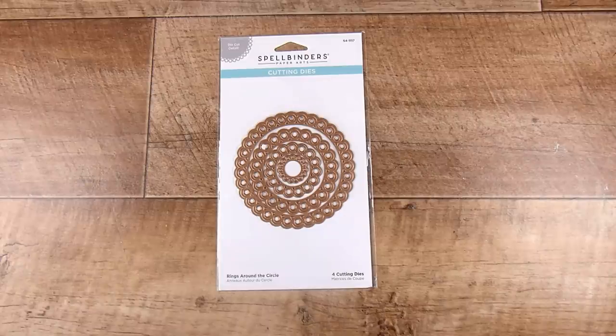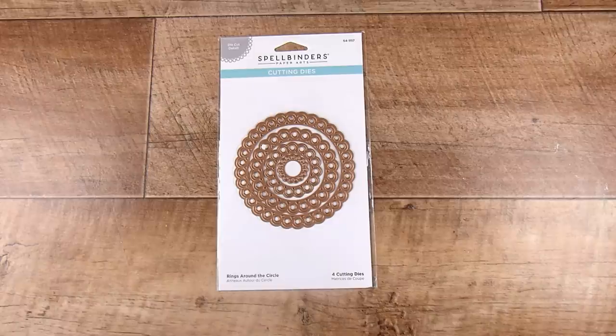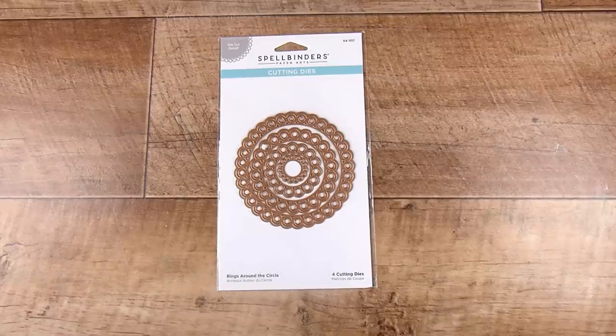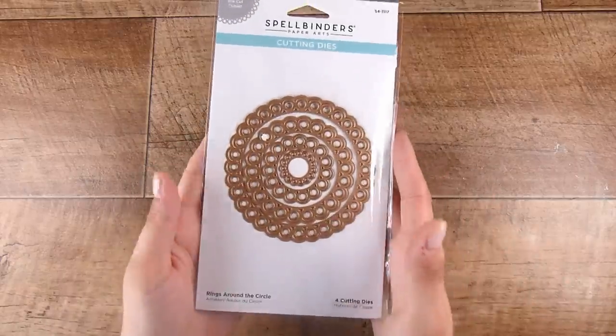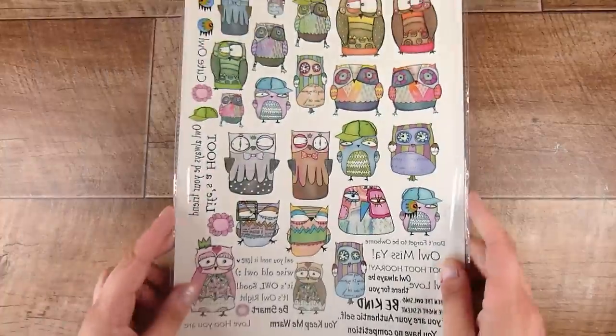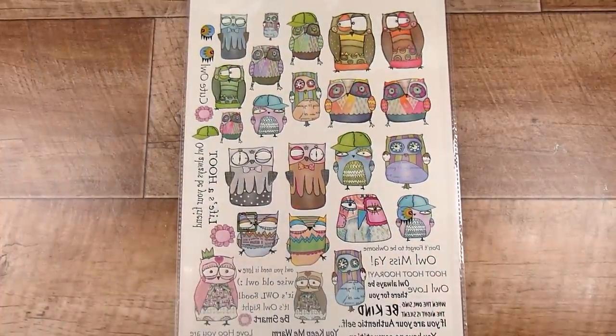First of all, we're going to start out with some nice quick and easy ways that we can do this. I have this Rings Around the Circle die from Spellbinders which will create the window shape. Of course you can use squares, circles, hearts, rectangles, triangles, anything will work.